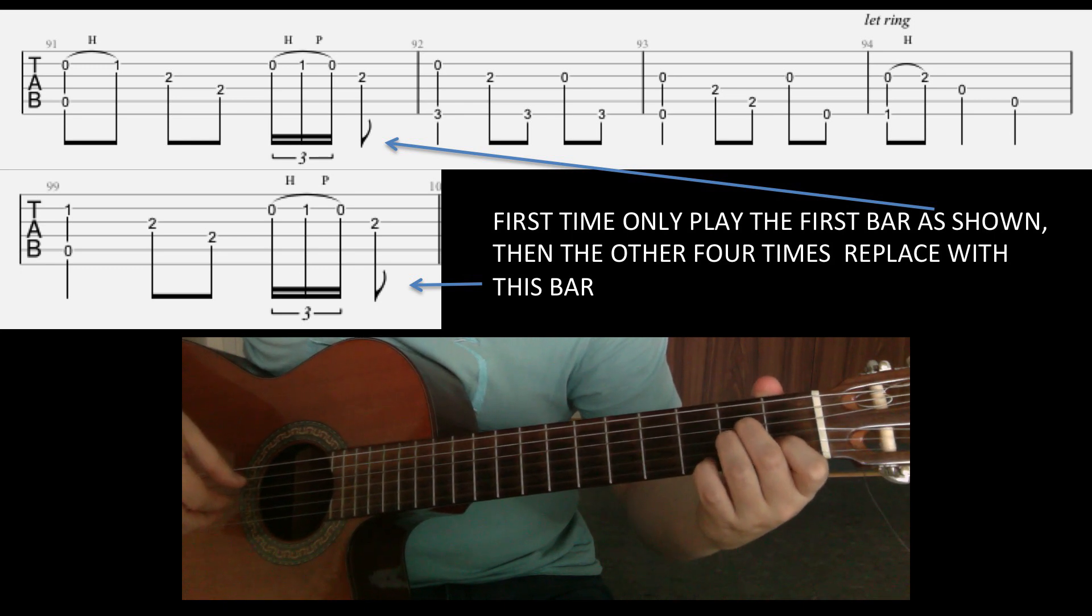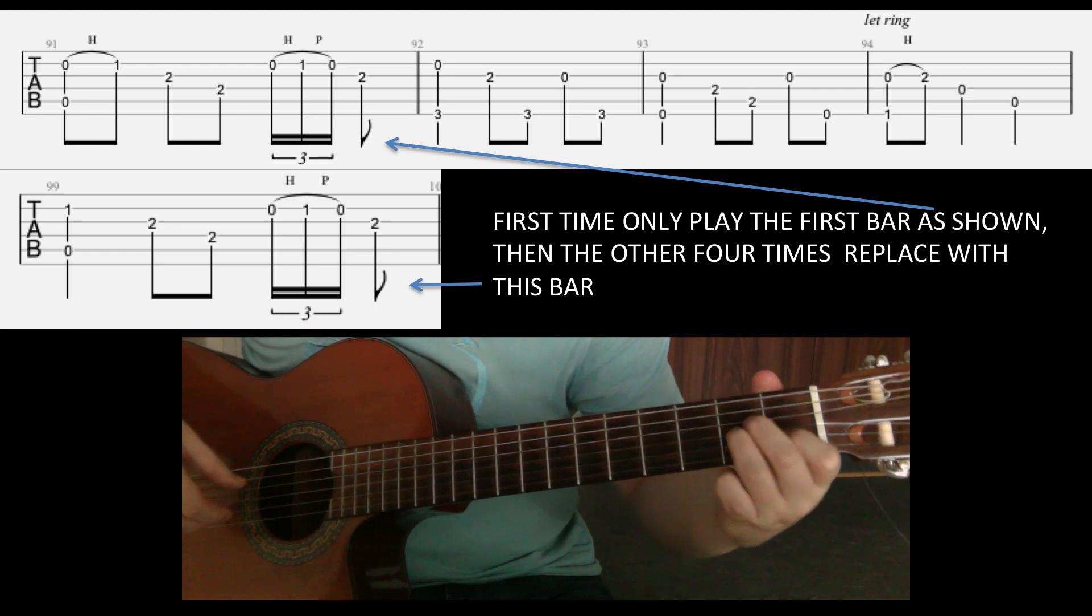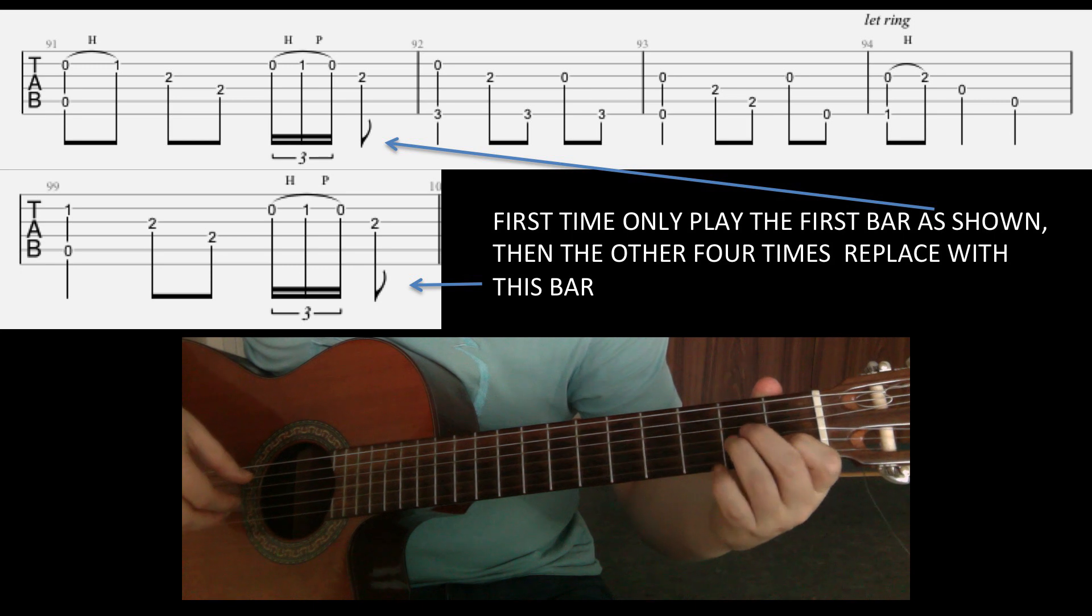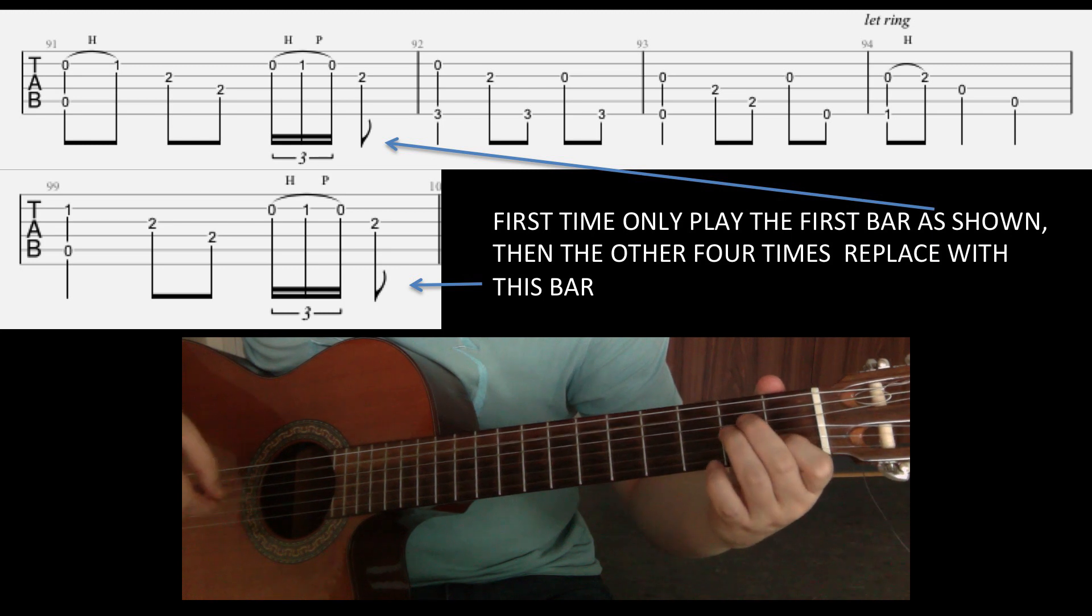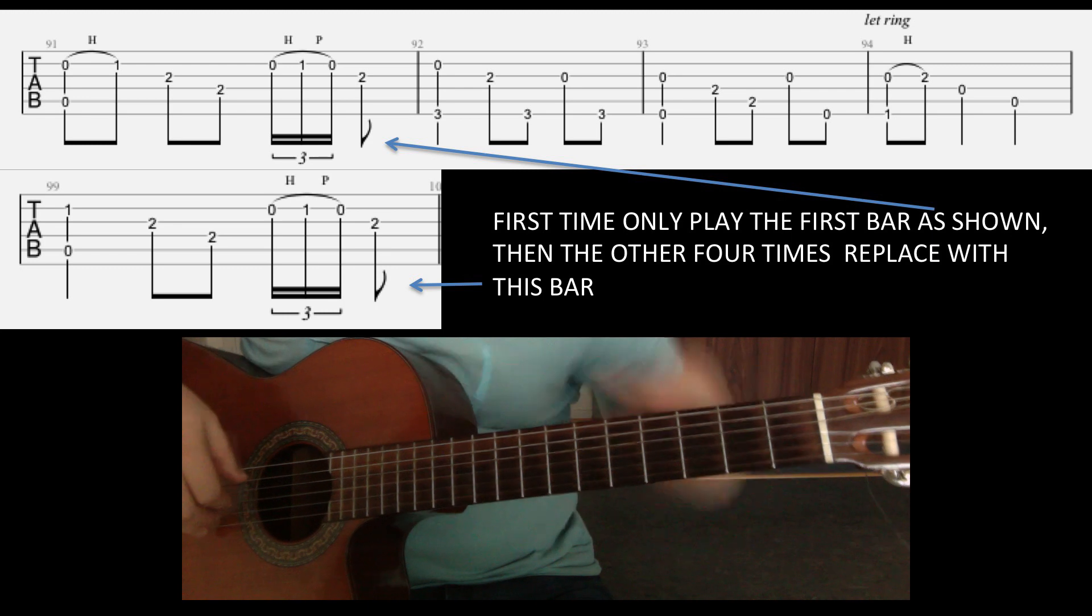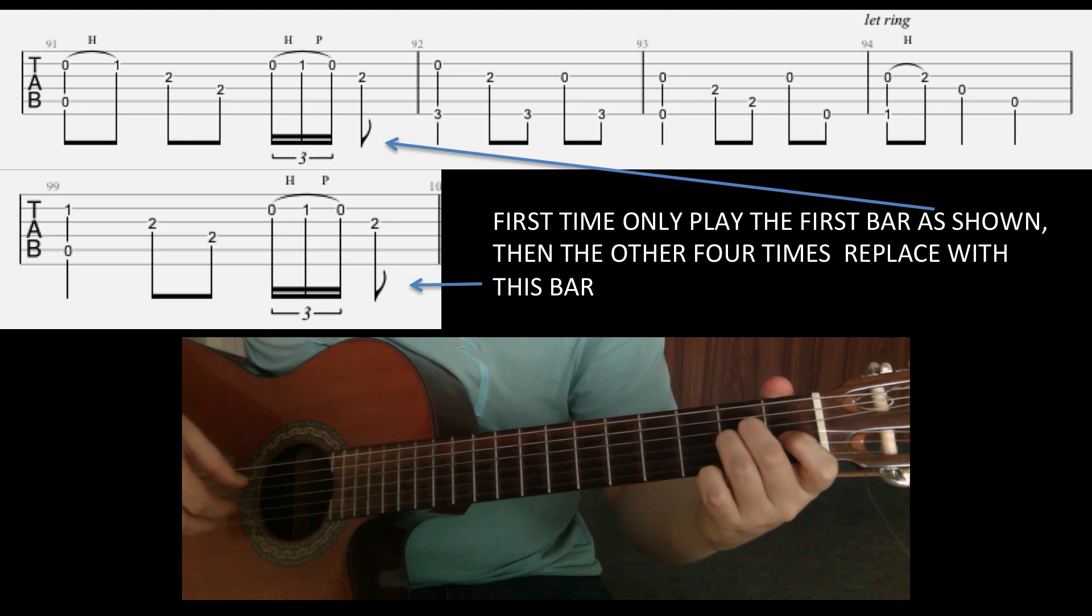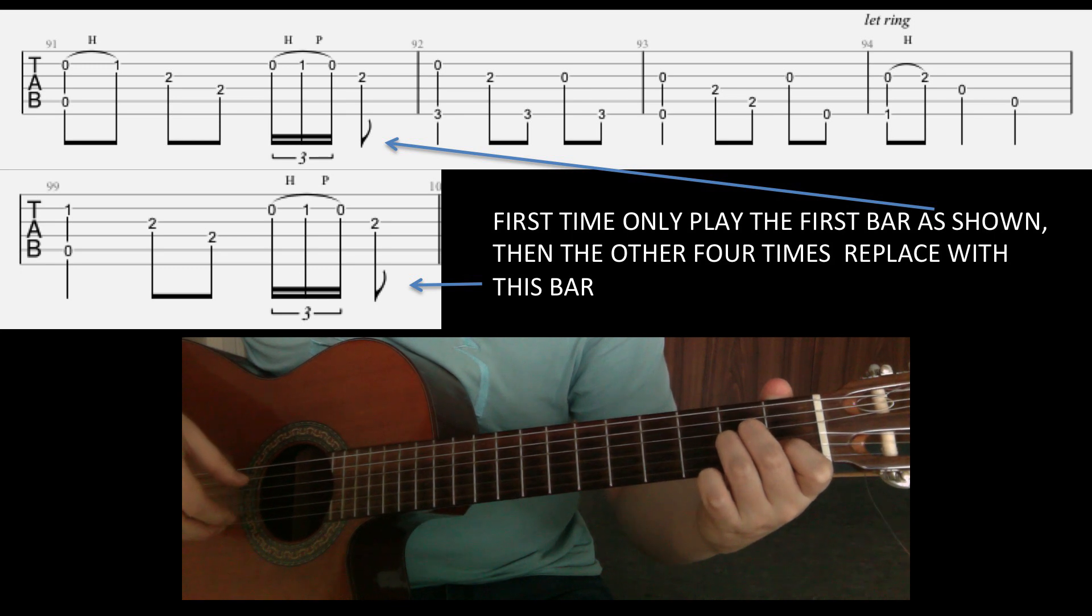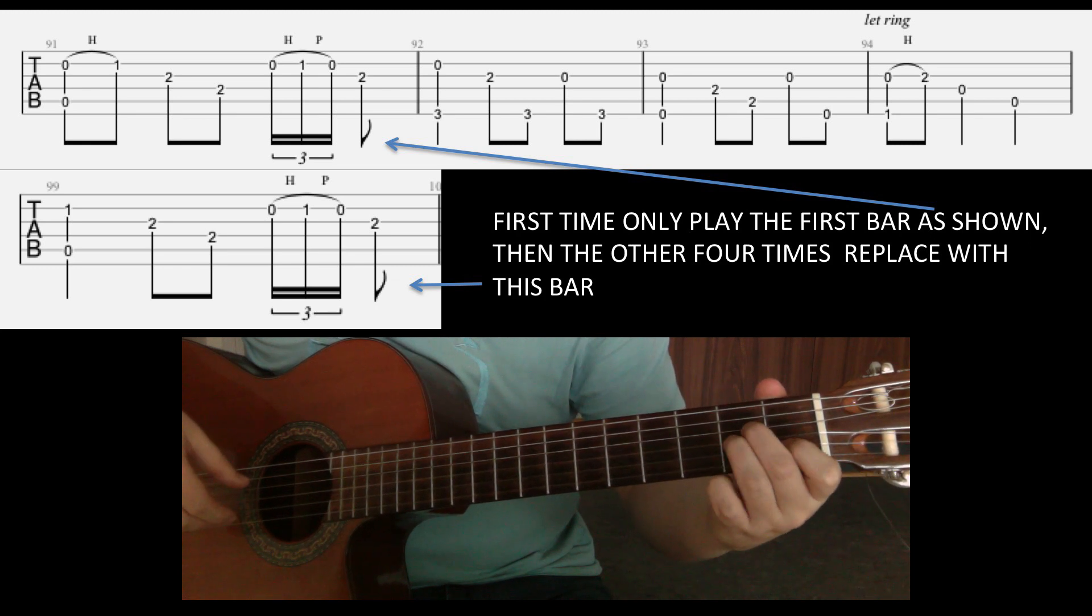And then the other four times, you don't play the hammer-on. You play C, the first fret here. You play that directly. So first time, and then second, third, fourth, fifth time. So I mean it's a quite simple song, a simple melody. If you know your fingerstyle picking, then you'll pick it up quite fast I think. If you're not familiar with fingerstyle playing, then you will have to work on that I guess.